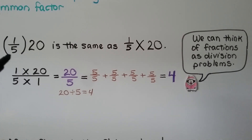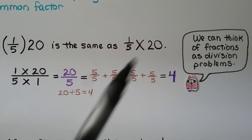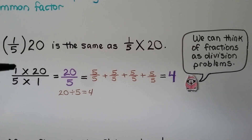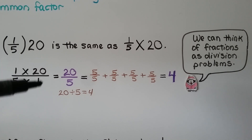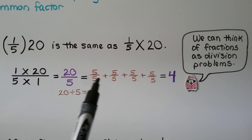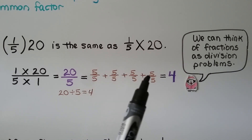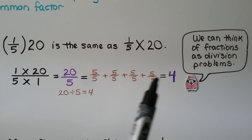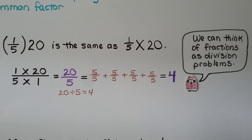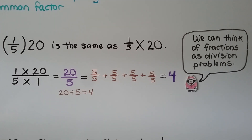Here we have 1 fifth in parentheses and a 20 on the outside — that's the same as 1 fifth times 20. We can write it as 1 times 20 over 5 times 1. The whole number 20 is 20 over 1. 1 times 20 is 20, and 5 times 1 is 5. That's equal to 5 fifths plus 5 fifths plus 5 fifths plus 5 fifths — we have 4 ones, that's 4 whole. We can also do 20 divided by 5, which equals 4, to get 4 whole. So we can think of fractions as division problems.